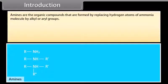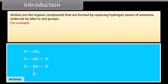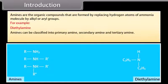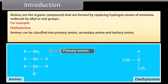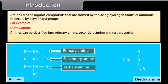Amines are the organic compounds that are formed by replacing hydrogen atoms of ammonia molecule by alkyl or aryl groups. For example, diethylamine. Amines can be classified into primary amine, secondary amine, and tertiary amine.